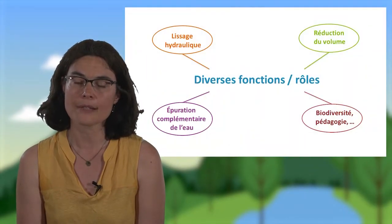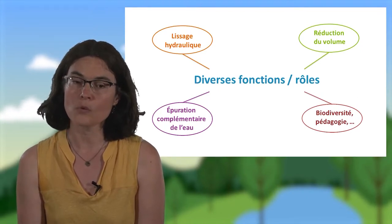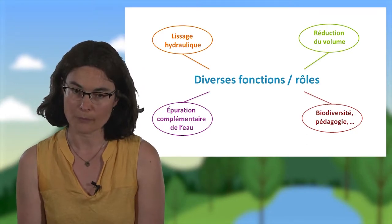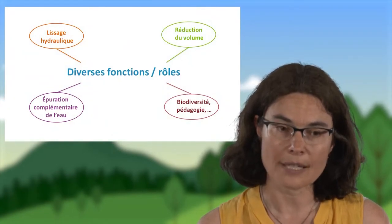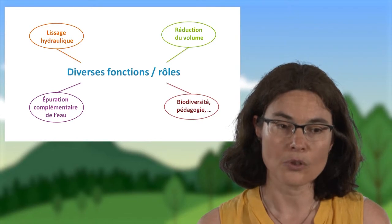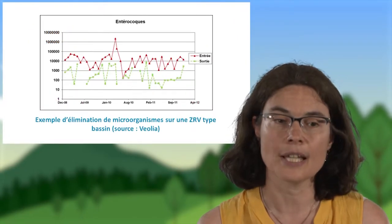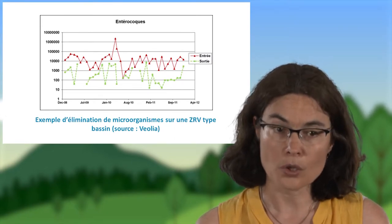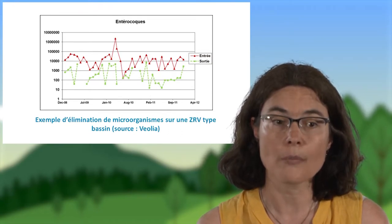Ces zones de rejet végétalisées permettent également de réaliser une épuration complémentaire de l'eau. En général, on observe une dénitrification au sein de ces zones, pouvant permettre d'éliminer jusqu'à 70% de l'azote. On observe également une élimination des micro-organismes, des bactéries présentes dans les eaux usées en sortie de station. Les abattements peuvent être assez intéressants, comme l'illustre le graphe pour les entérocoques, où on peut atteindre des abattements d'un facteur 10 000, voire plus.